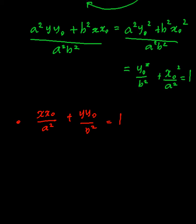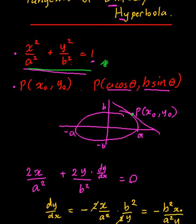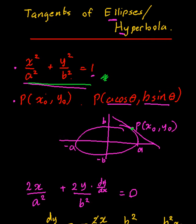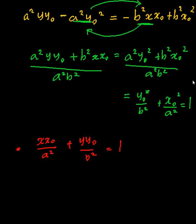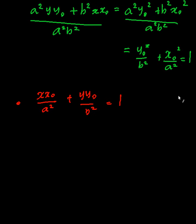So the equation of the tangent is x·x1 on a squared plus y·y1 on b squared equals 1. If you look at this, all that's happened is I've taken one of the x's from x squared and substituted x1 in, and the same with y. I'll use x1, y1 — you'll see why in the next video.